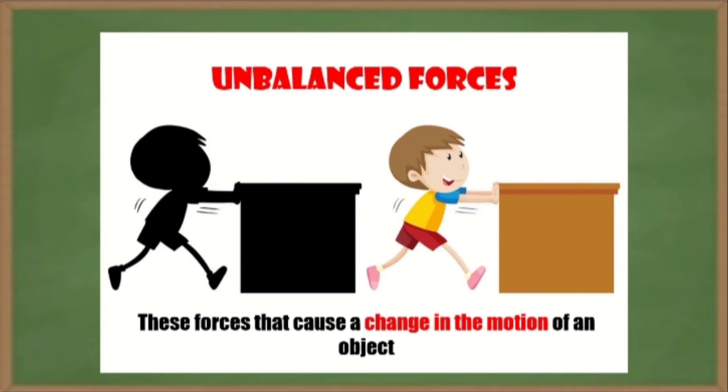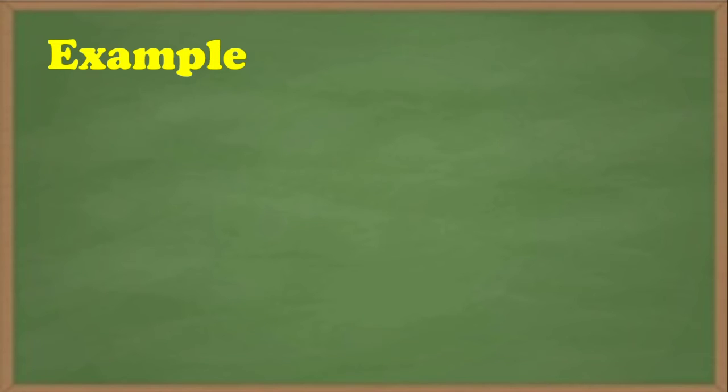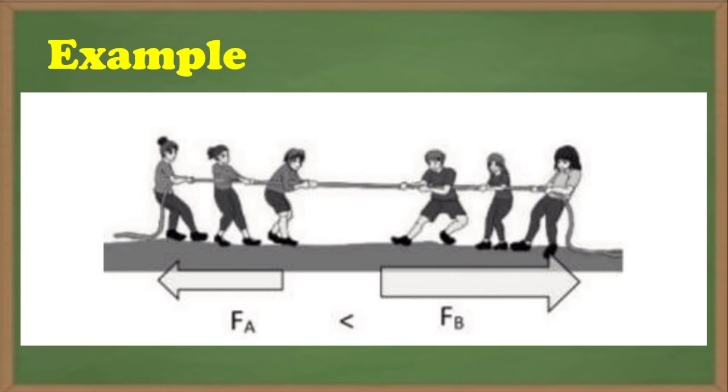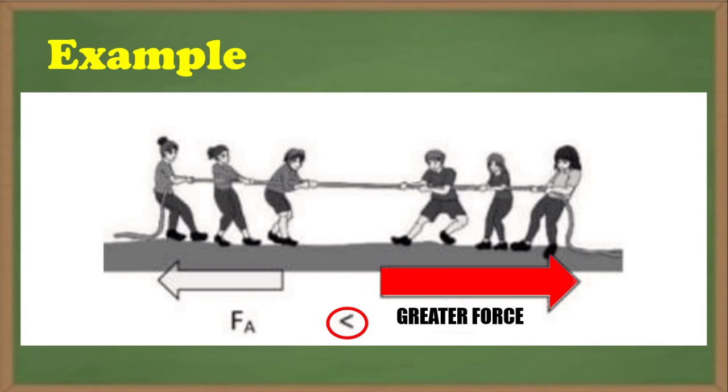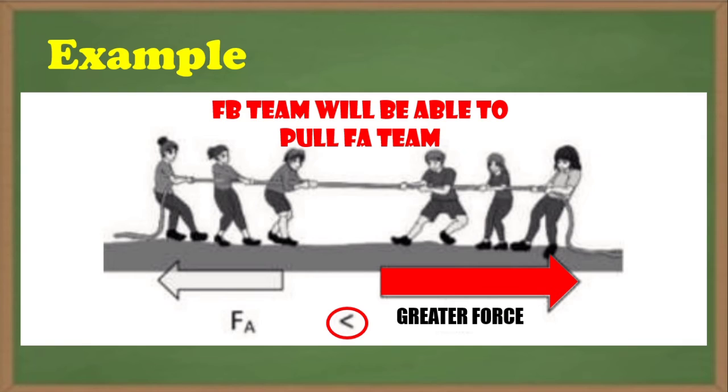Unbalanced forces are not equal and in opposite direction. Another example of unbalanced force is, suppose that one of the teams in Tug of War, as shown in balanced forces, exerts greater magnitude of force FB on the ground than the other team. The forces applied on the ground would no longer be equal. One team would be able to pull the other team in the direction of the large force.